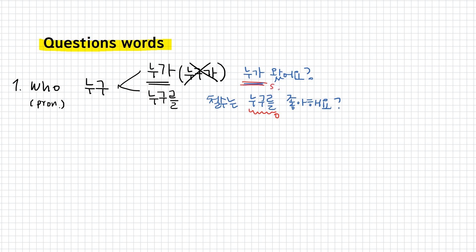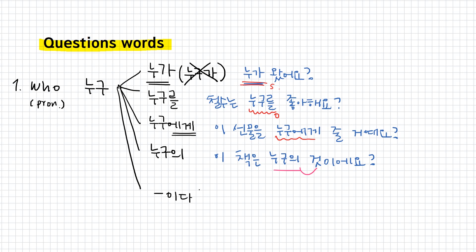누가 subject, placed at the beginning of the sentence. When a dative particle is attached, then 누구에게. 이 선물을 누구에게 줄 거예요? To whom are you gonna give this present? When the possessive particle is attached, 누구의. 이 책은 누구의 것이에요? Whose book is this? Lastly, 이다 can be attached to 누구. For example, 이 사람은 누구예요? Who is this person?